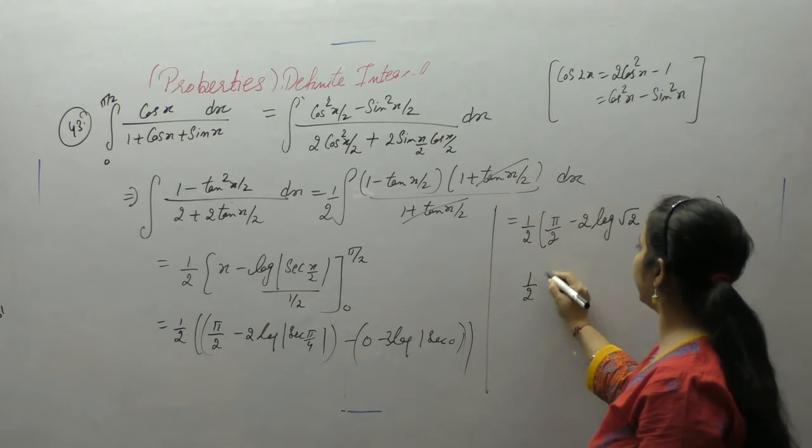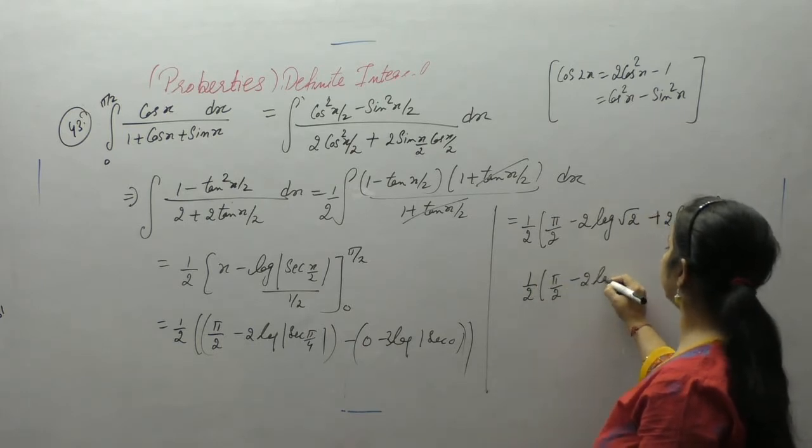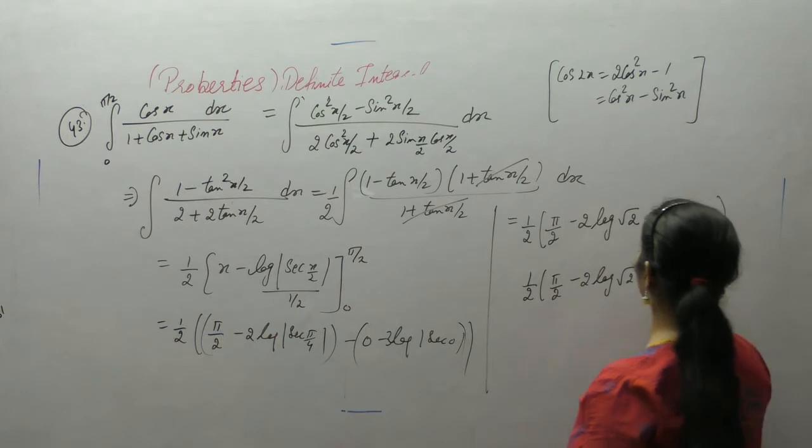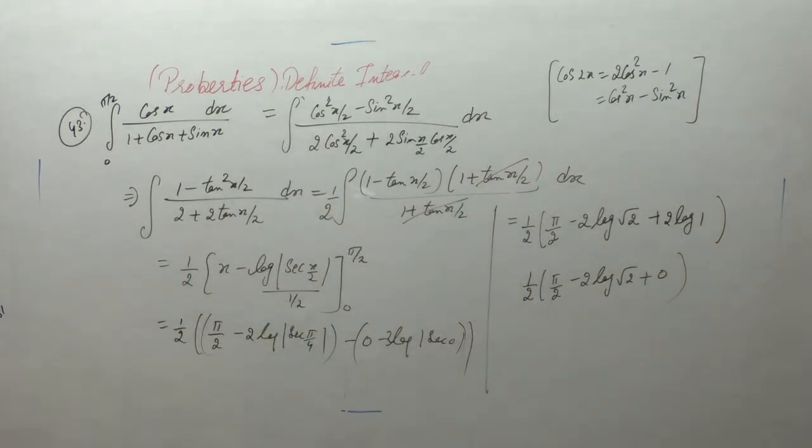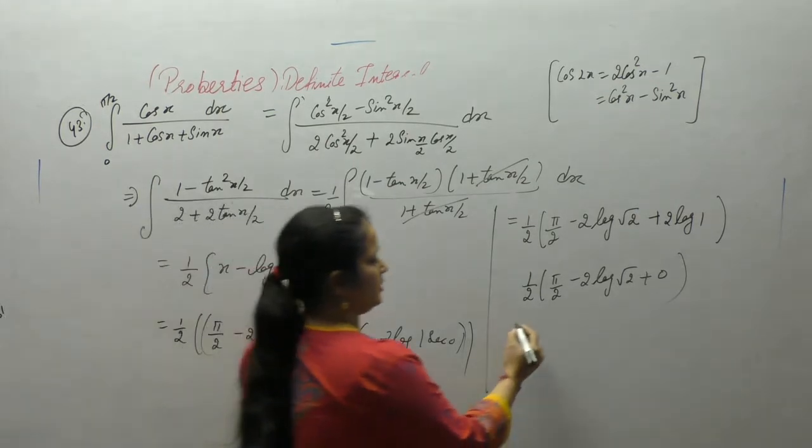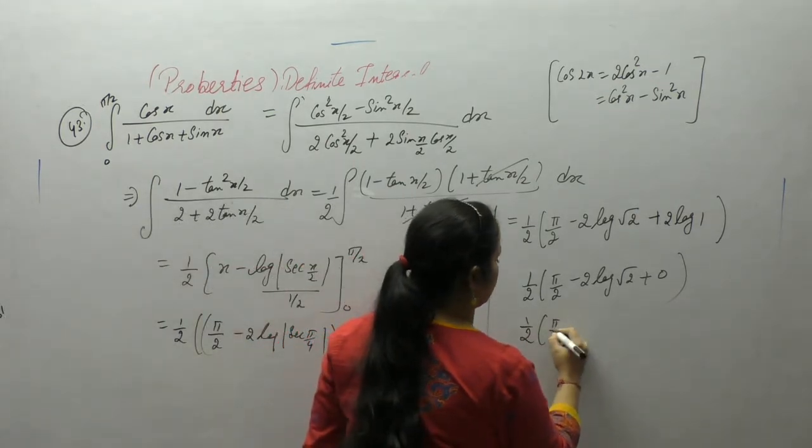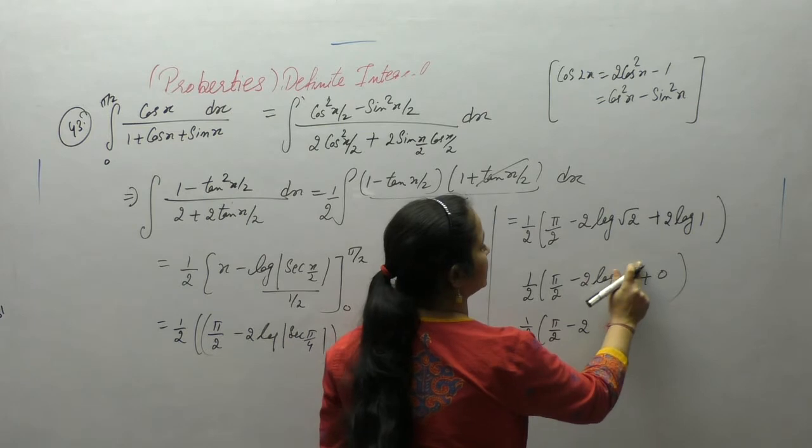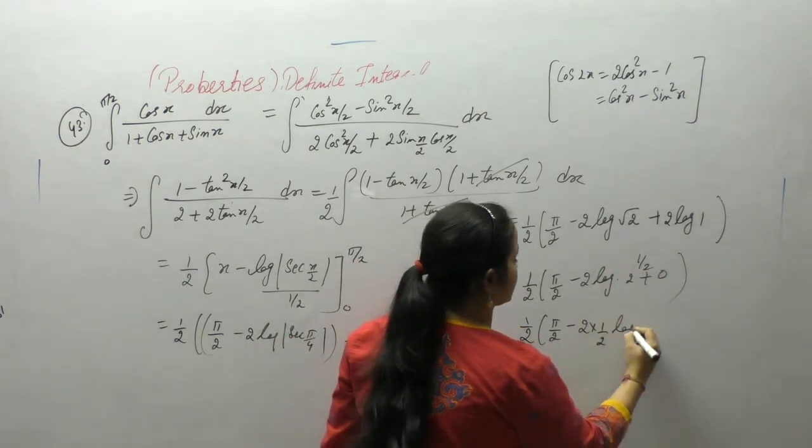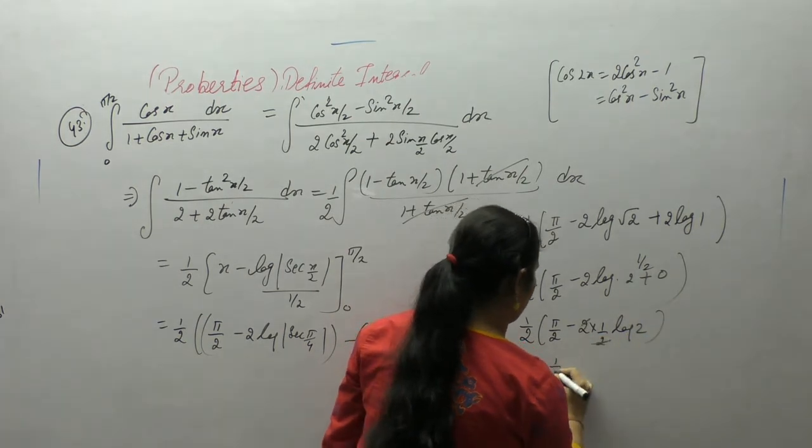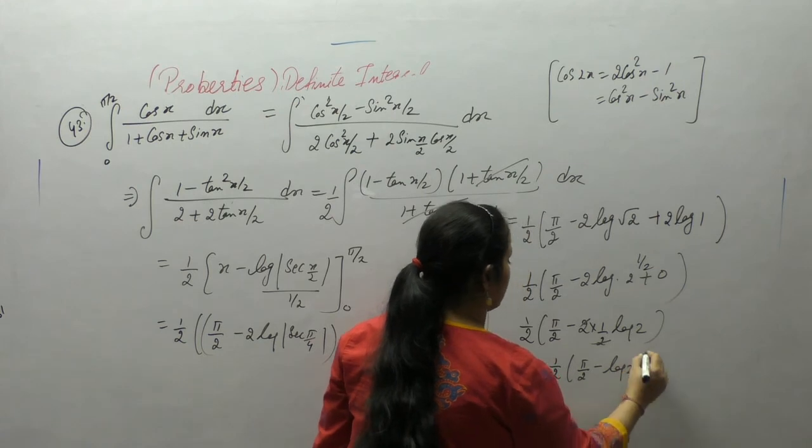So 1 by 2, pi by 2 minus 2 log root 2. 1 by 2 into pi by 2. Log x power m is m log of x. So 1 by 2, pi by 2 minus log 2.